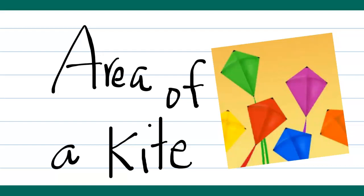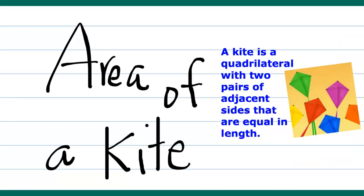Hi everyone, we are now in one of our lessons on geometry: finding the area of a kite. So what is a kite? A kite is a quadrilateral with two pairs of adjacent sides that are equal in length. If you look at it, it's like perfectly sliced into half.